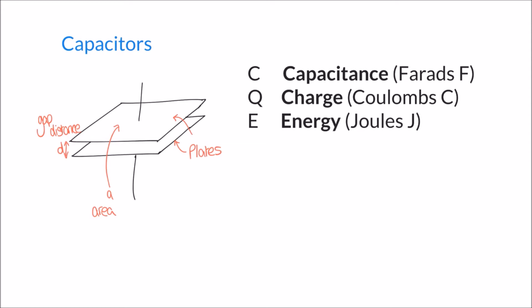Now that we've identified the key parameters, let's give them some values. Our capacitor has a capacitance C of 10 microfarads, the area of its plates A is 0.2 meters squared, the distance between the plates D is 3 micrometers, and we'll connect this capacitor to a power supply with a voltage of 8 volts.